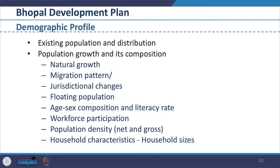As suggested in the guidelines, the demographic profile should cover existing population and distribution, population growth and composition including natural growth, migration pattern, jurisdictional changes, floating population, age and sex composition, literacy rate, workforce participation, population density (net and gross), and household characteristics including household sizes. Let us see what information has been given in the Bhopal Development Plan.